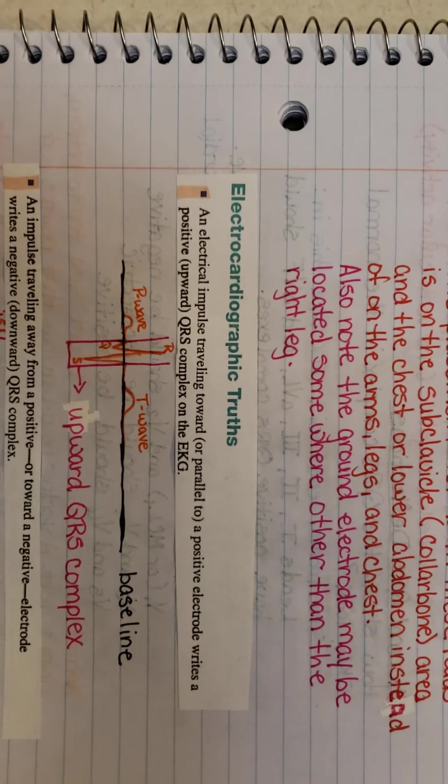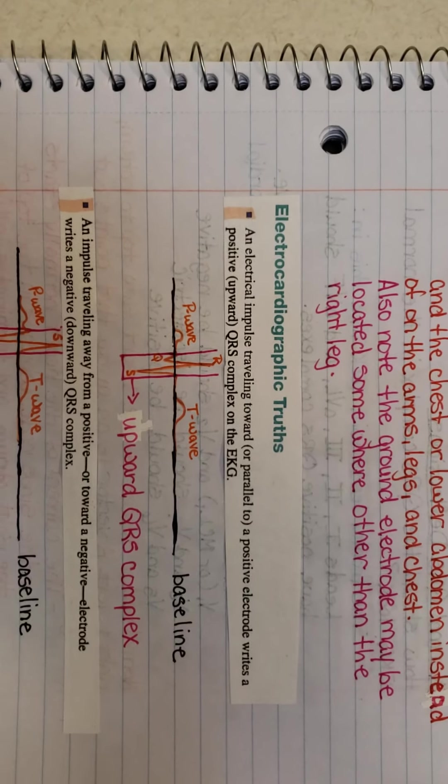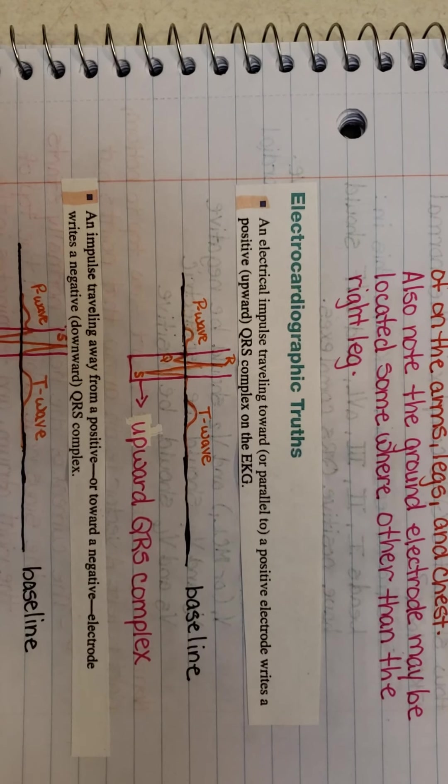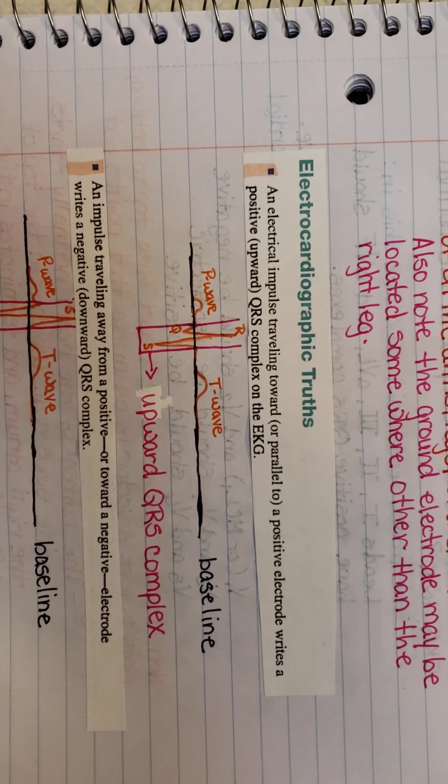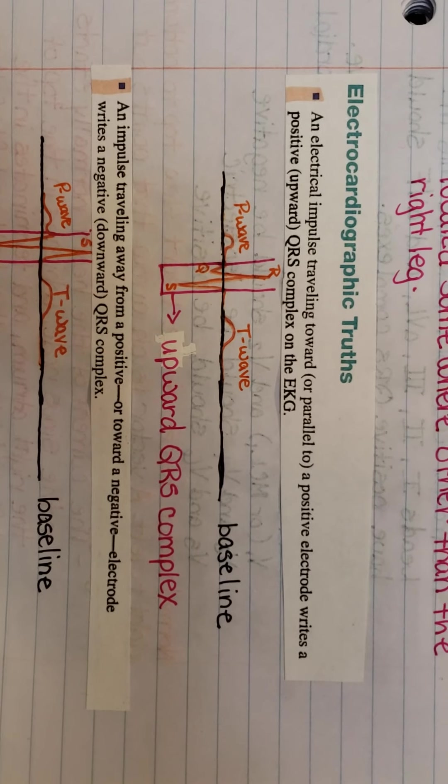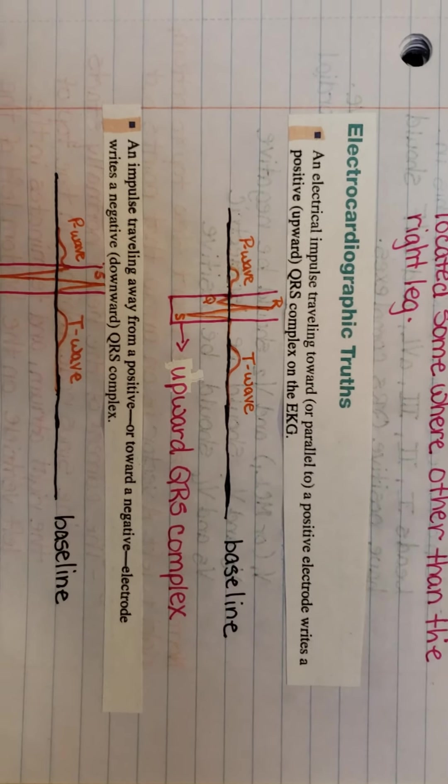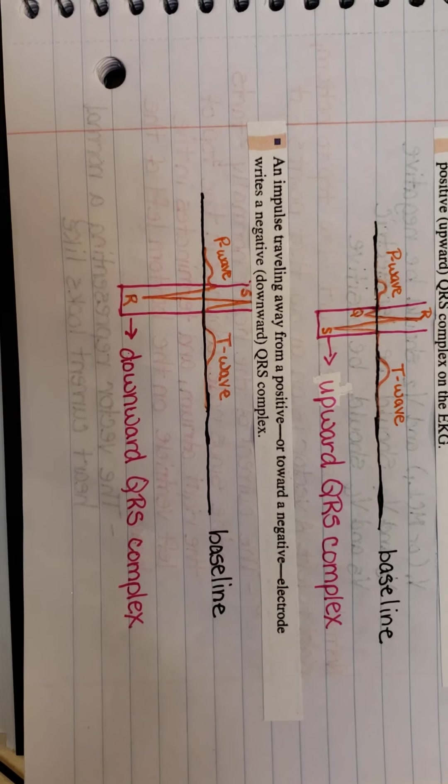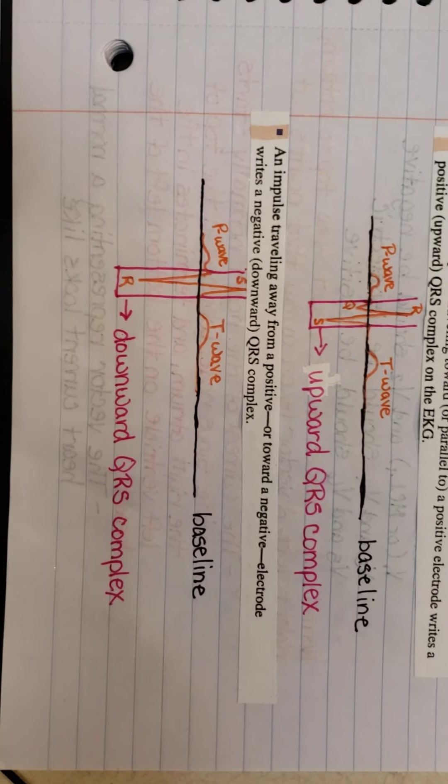Let's go through EKG truths. These are EKG truths. These need to be put in memory because you will come back to those truths time and time and time again, as we go further into our lesson into EKG. The first electrocardiographic truth is if an electrical impulse travels toward or parallel to a positive electrode, it writes a positive or upright QRS complex on the EKG where you have your baseline and everything is going upward. Your QRS looks like a normal QRS.